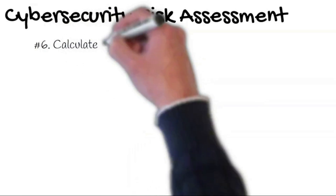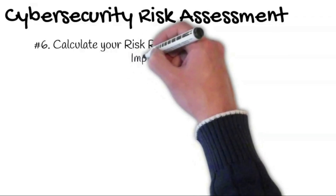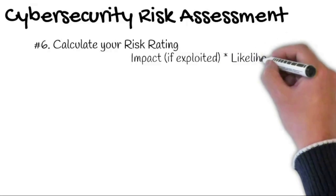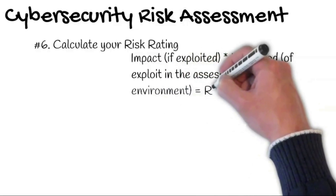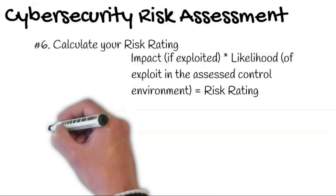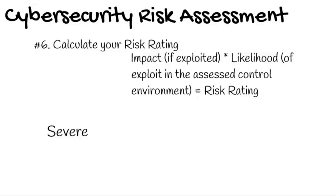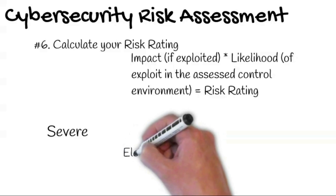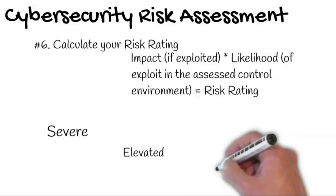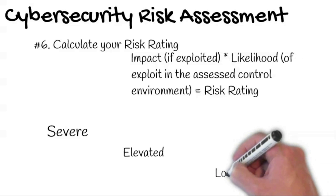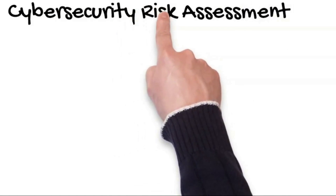The sixth step is to calculate your risk rating. Even though there is a ton of information and work that goes into determining your risk rating, it all comes down to a simple equation: impact if exploited multiplied by likelihood of exploit in the assessed control environment equals risk rating. Examples of risk ratings are: severe — a significant and urgent threat to the organization exists and risk reduction remediation should be immediate; elevated — a viable threat exists and remediation should be completed in a reasonable period of time; low — threats are normal and generally acceptable but may still have some impact, and implementing additional security enhancements may provide further defense.